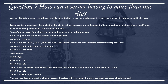Question 7: How can a server belong to more than one site? Answer: By default, a server belongs to only one site. However, you might want to configure a server to belong to multiple sites. Because sites are necessary for replication, for clients to find resources, and to decrease traffic on inter-site connections, simply modifying a site's membership might cause performance problems. To configure a server for multiple site membership, perform the following steps. Step 1 — Log on to the server you want to join to multiple sites. Step 2 — Start Regedt32. Step 3 — Go to HKEY_LOCAL_MACHINE\SYSTEM\CurrentControlSet\Services\Netlogon\Parameters registry entry.